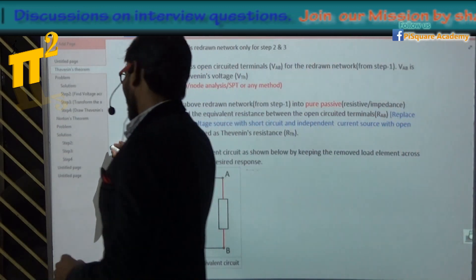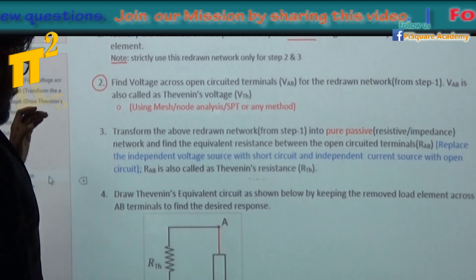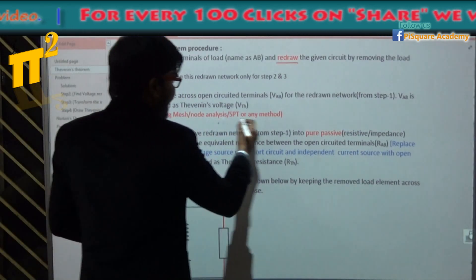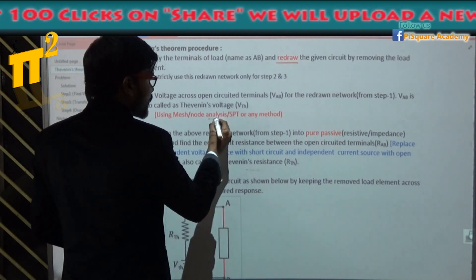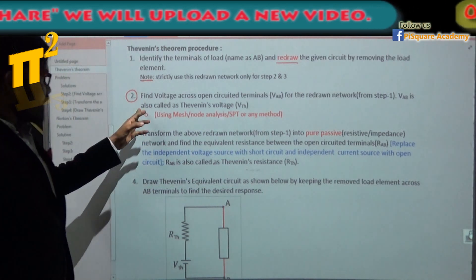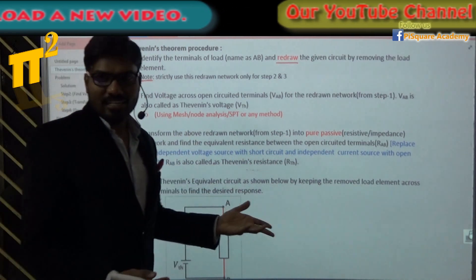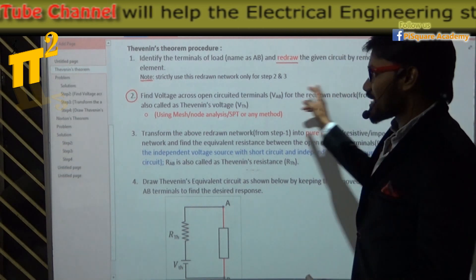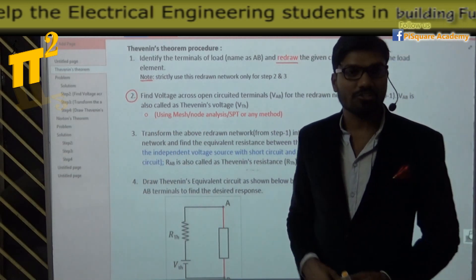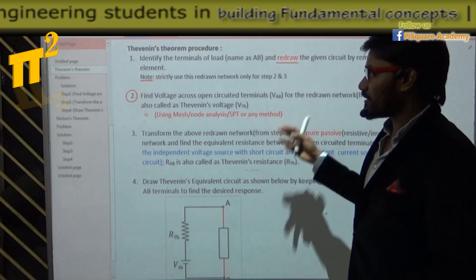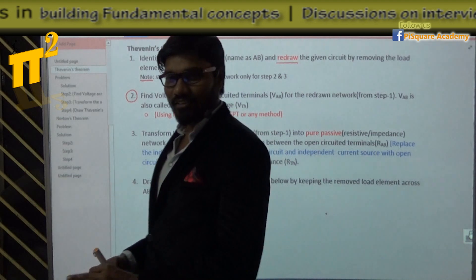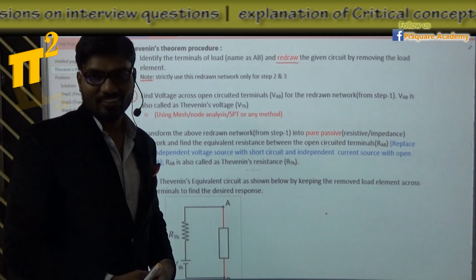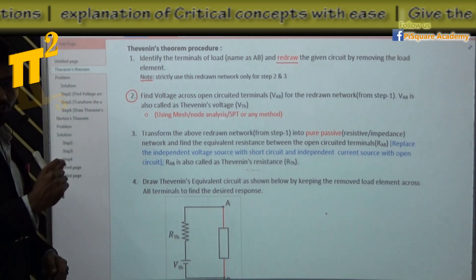Here is an important point. How many steps do I have? Four steps. But what if I use step 2 alone — with mesh analysis, node analysis, or superposition — I can get the solution directly. I don't have to go to step 3 or step 4. So why am I doing all these steps? Does that make Thevenin's useless? No — that is not the case. That is the beauty of Thevenin's.